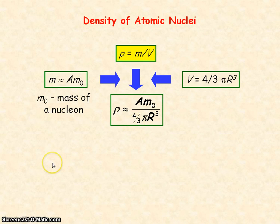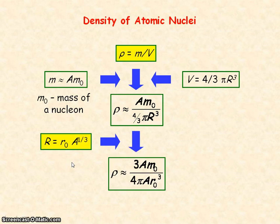And then we know the radius of a nucleus is given by this equation. And so if we substitute for R into the equation for density, we get this. And the nuclear number A cancels.